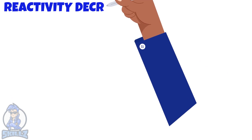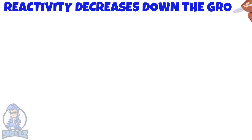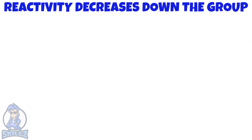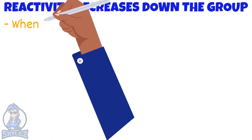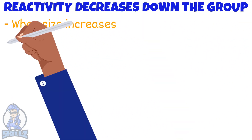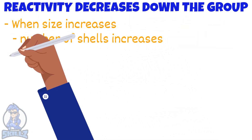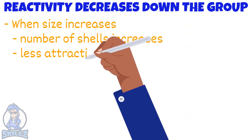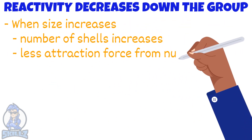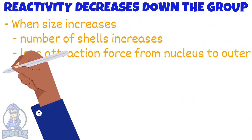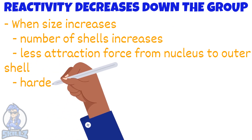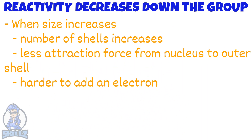A halogen's reactivity decreases down the group. This is because when the size of the atom increases, as the number of shells increases, adding an extra electron to the outer shell becomes less easy due to a smaller attraction force from the nucleus.